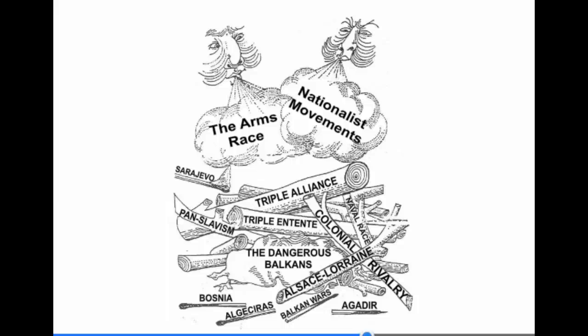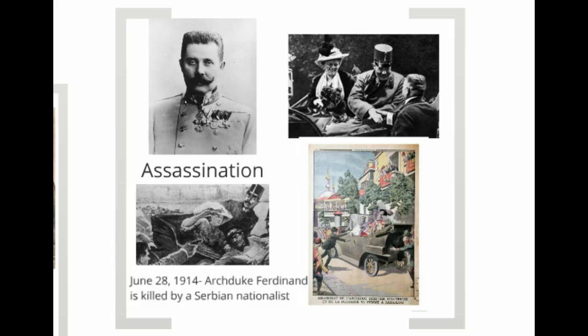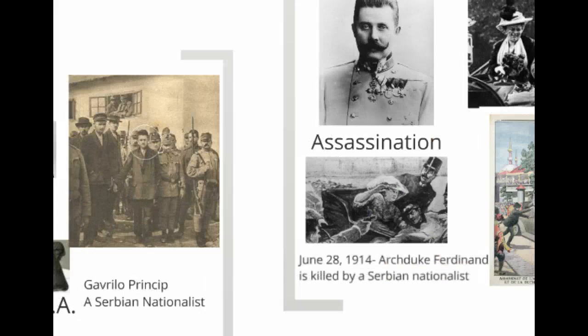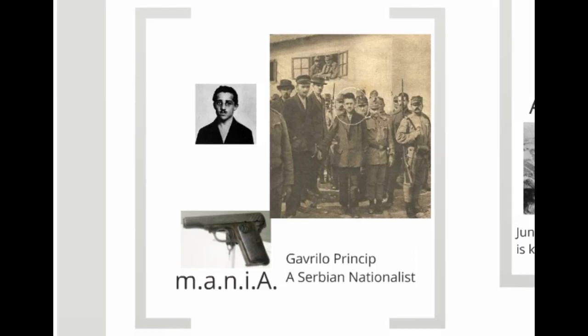That event is depicted by the match about to light this fire, and that match is Sarajevo. In our acronym MANIA, the last A stands for assassination. On June 28, 1914, Archduke Franz Ferdinand of Austria-Hungary was in Bosnia — specifically in the city of Sarajevo — with his wife, and they were assassinated. They were killed by a Serbian nationalist, Gavrilo Princip, who felt that Bosnia should not be part of Austria-Hungary but should be independent or part of Serbia. Princip was captured and later executed. The handgun used is pictured here.